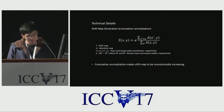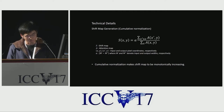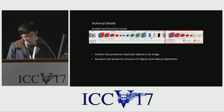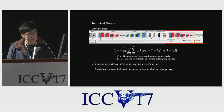When the input image is warped to the output grid, each pixel should not be spatially inverted. Therefore, we perform cumulative normalization in order to make the shift map monotonically increasing. From the shift map, the input image is warped to the output grid. Then, for training, content and structural losses are used.